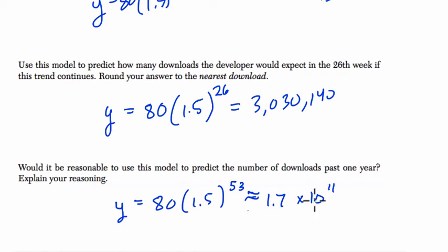Let's try it out. You get 80 times 1.5 to the power of 53. So we get 1.7 times e to the 11th. So this is about 1.7 times 10 to the 11th. Well, billion is 10 to the 9th, and right now there are only 7 times 10 to the 9th people in the world. So this is 2 powers of 10 higher, so it's 100 billion, essentially. So it's 170 billion downloads.